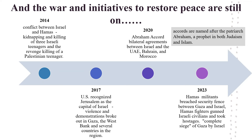In 2014, the conflict between Israel and Hamas was fueled by the kidnapping and killing of three Israeli teenagers and the revenge killing of a Palestinian teenager. In 2017, US President Donald Trump announced that the US would recognize Jerusalem as the capital of Israel, after which violence and demonstrations broke out in Gaza, the West Bank and several countries in the region. In 2020, the Abraham Accords — bilateral agreements between Israel and the UAE, Bahrain and Morocco — were signed to normalize relations. In 2023, Hamas militants breached a security fence between Gaza and Israel, with Hamas fighters gunning down Israeli civilians and taking hostages. The Israeli government ordered a complete siege of Gaza.